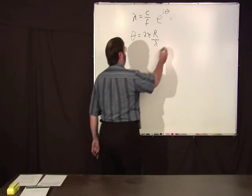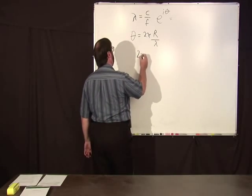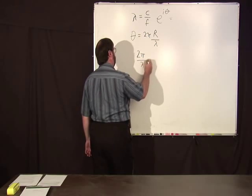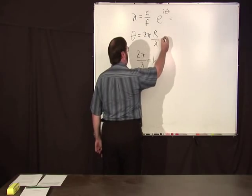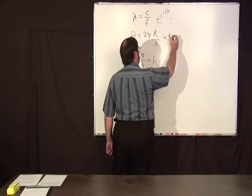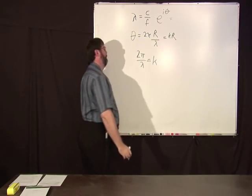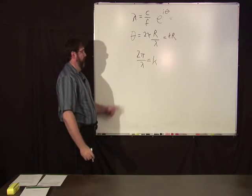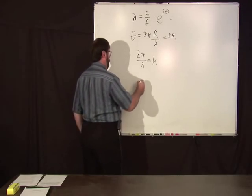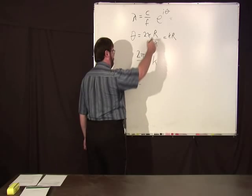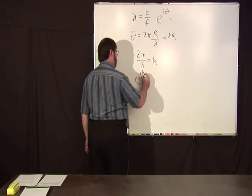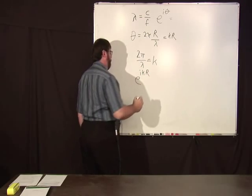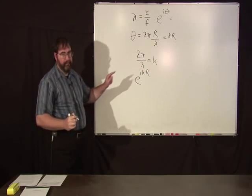So this 2π over lambda is a special symbol k, the wave vector. So this is equal to kr. In general, the phase of a wave going in a particular direction r is going to be e to the ikr in that direction.